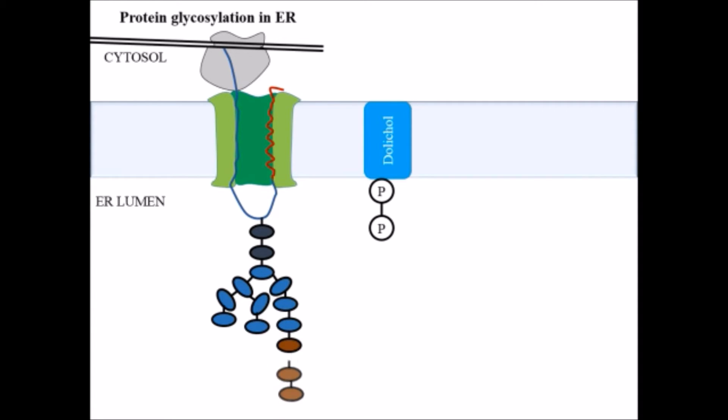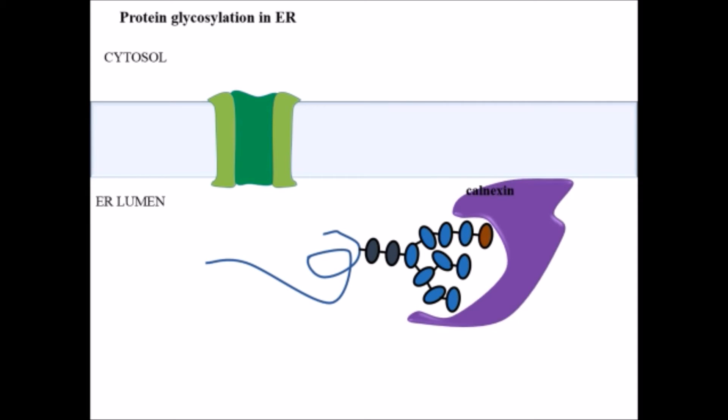These 14 sugar residues get transferred to the protein. After that, the protein gets internalized, but before that, the glucose residues get broken down. Not all three glucose residues are removed at once; one glucose residue remains there for the recognition of calnexin protein.